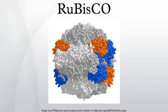RuBisCO is important biologically because it catalyzes the primary chemical reaction by which organic carbon enters the biosphere. While many autotrophic bacteria and archaea fix carbon via the reductive acetyl-CoA pathway, the 3-hydroxypropionate cycle, or the reverse Krebs cycle, these pathways are relatively smaller contributors to global carbon fixation than that catalyzed by RuBisCO.